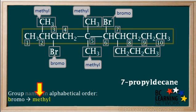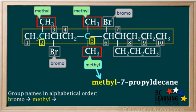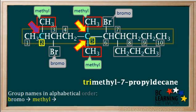The next group we add is methyl. We write methyl before the dash 7. This compound has three methyl groups, so the prefix for three is tri — we write tri in front of methyl. Note that trimethyl is all one word. One of the methyl groups is attached to carbon 2, and the other two are attached to carbon 5, so we write 2,5,5 dash in front of trimethyl. We write a number for each methyl group, and since two are on carbon 5, we write 5 twice.